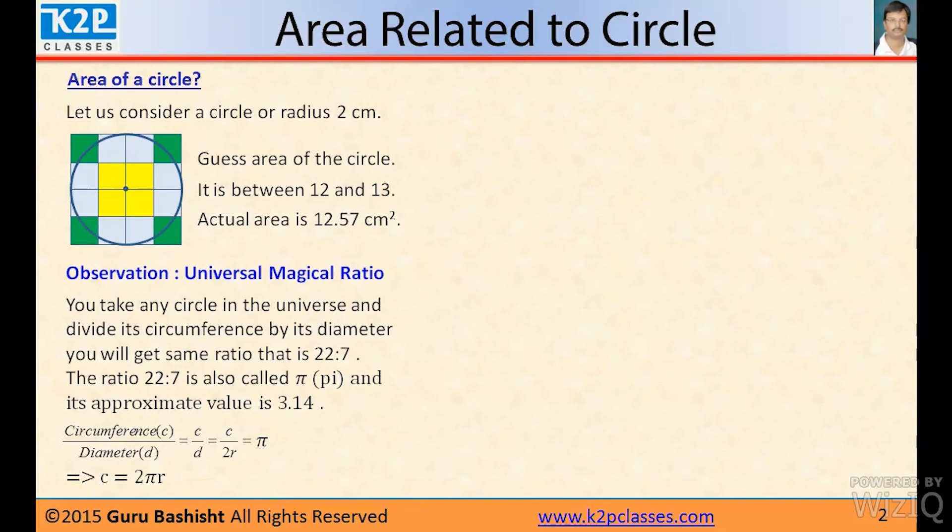Observation: Universal magical ratio. You take any circle in the world, in the universe, and divide its circumference by its diameter, you will get the same ratio, and that is 22:7. The ratio 22:7 is also called π, and it is approximately 3.14. So circumference of any circle divided by diameter is always π, no matter how big or how small the circle is.